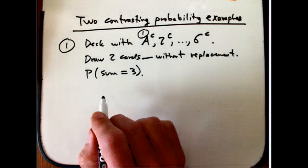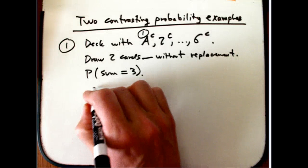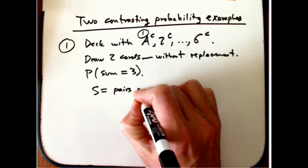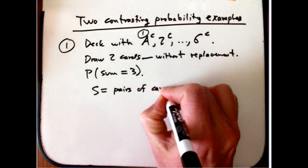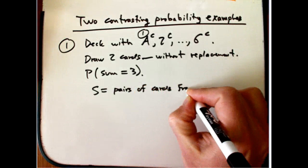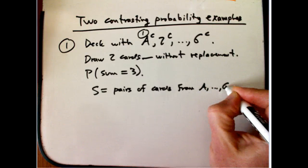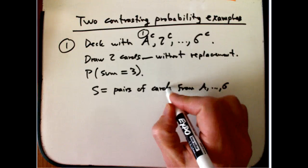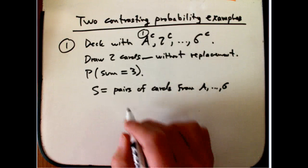So what's our sample space? And that's just pairs of cards from ace through six. And I get to choose, in principle, whether to count them with order or not.